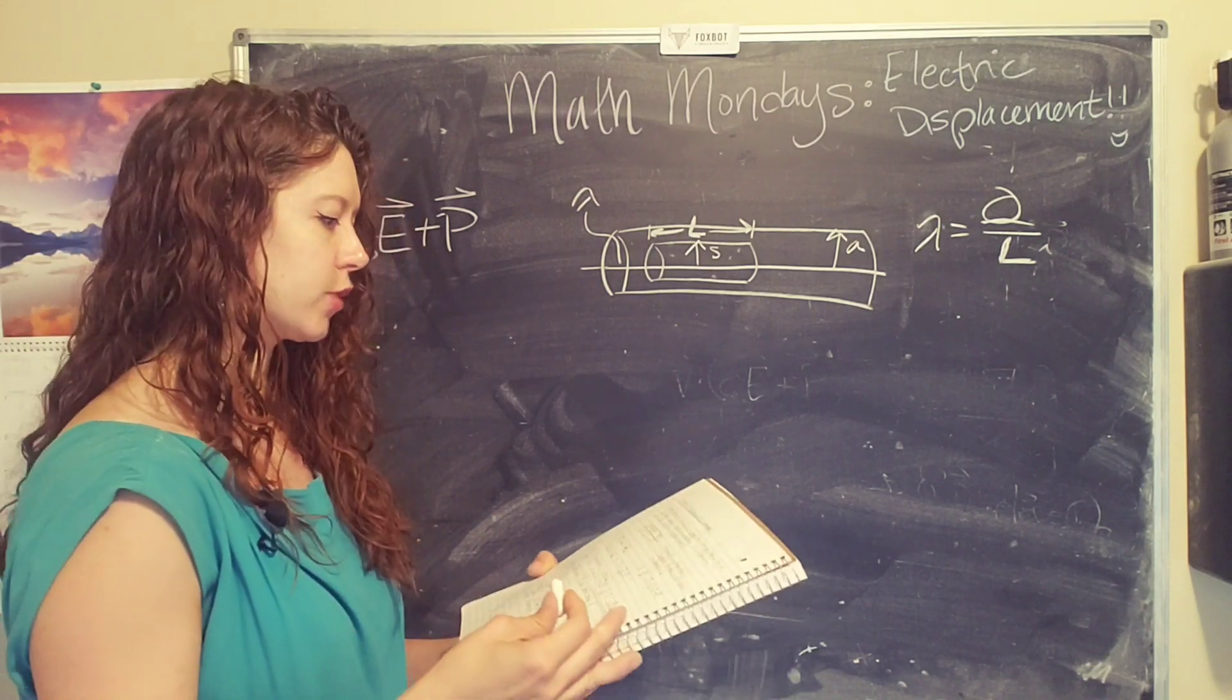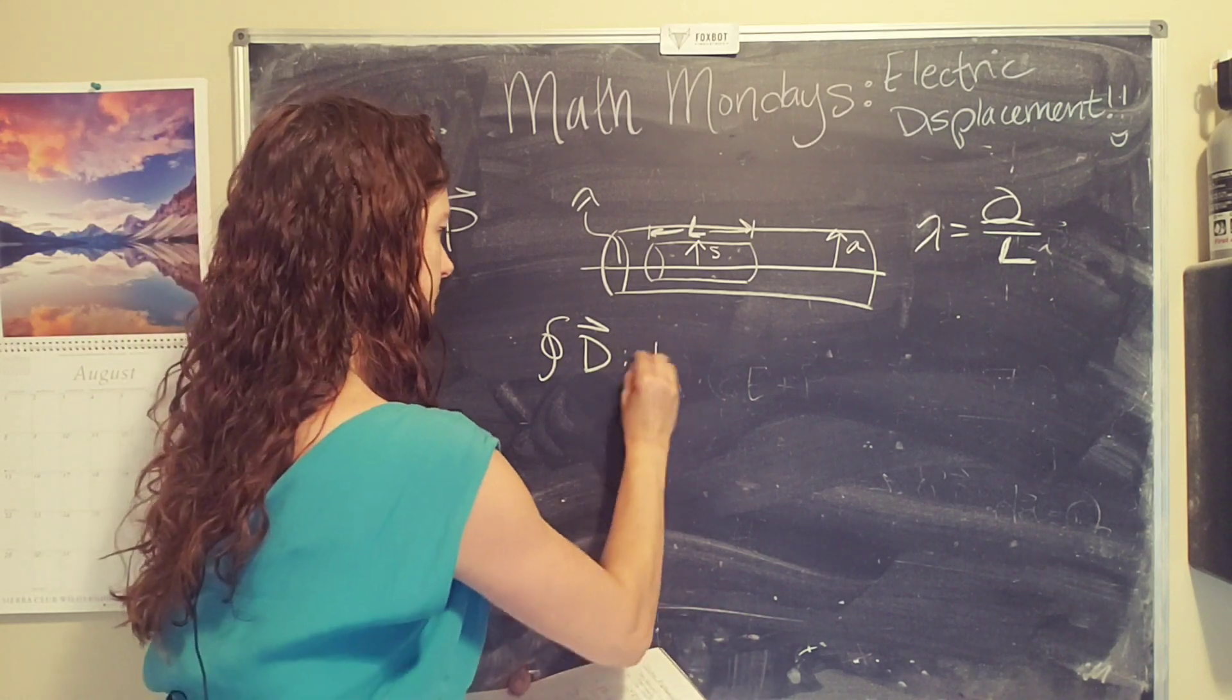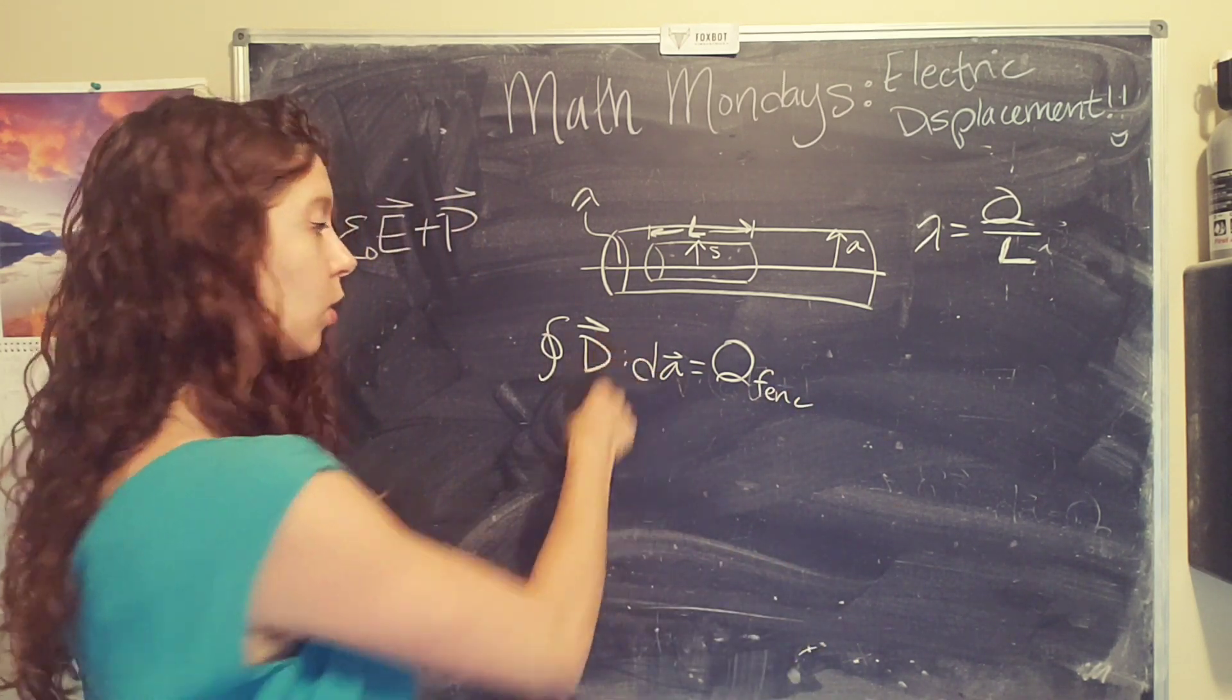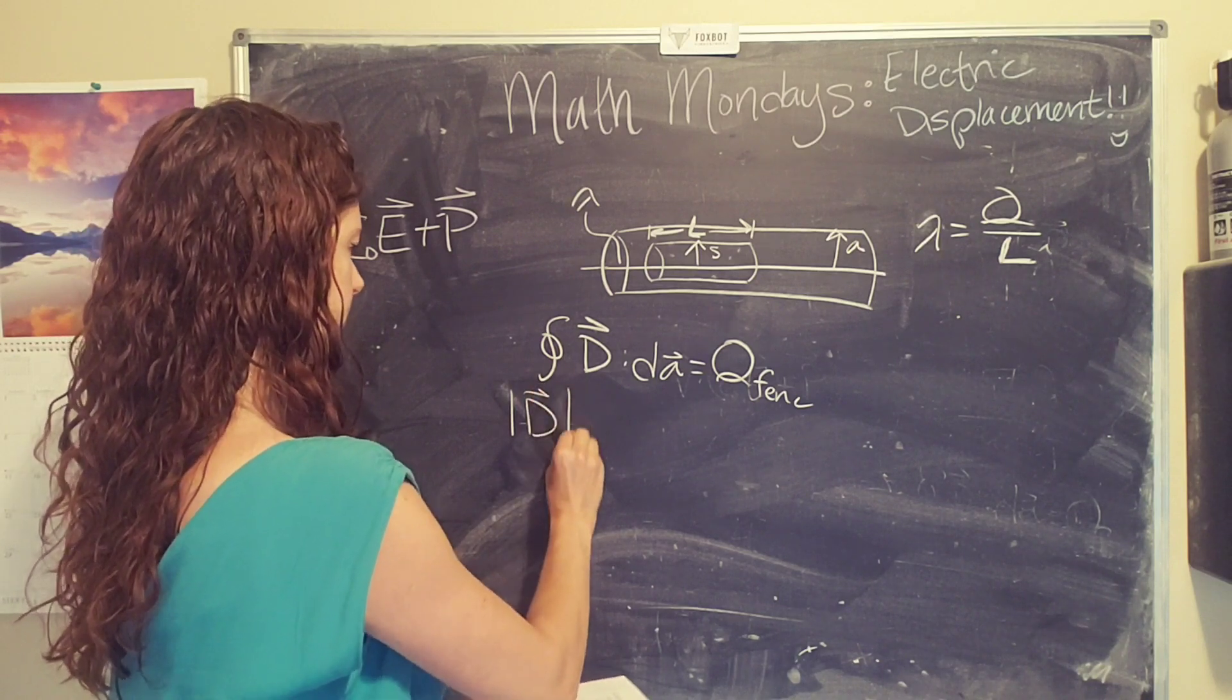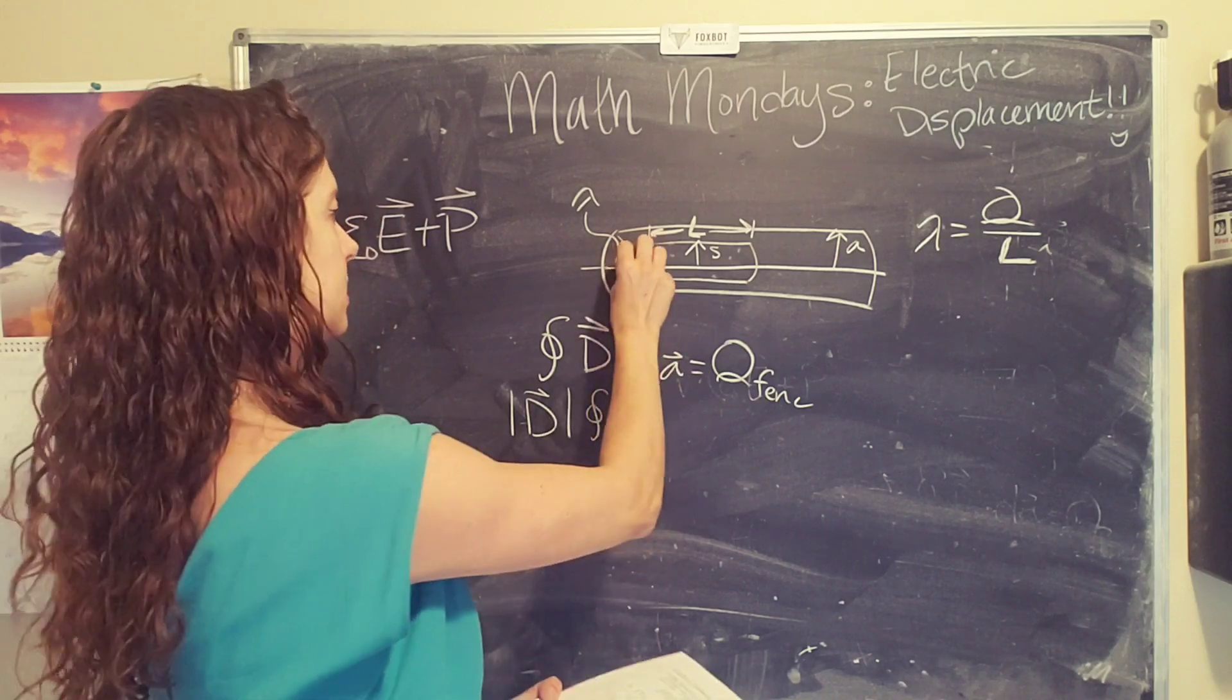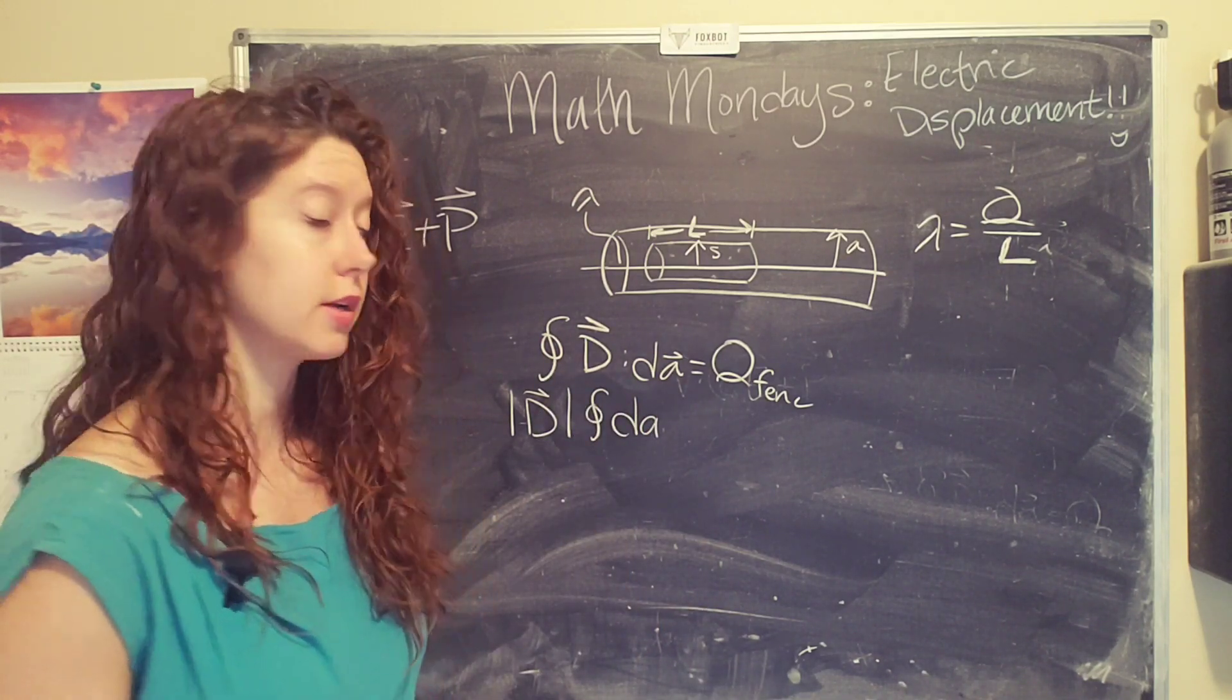we have our definition for electric displacement. So we're going to start with the Gaussian integral form, where we have the electric displacement dot dA equals QF enclosed, or the free charge enclosed. And what's really cool is that because it's a uniform line charge density, we can pop out the magnitude of d and just do the integral of dA. Note that only the round part of the cylinder counts because the edges are going to be perpendicular to d. So that part of the integral will go to zero, because two vectors that are perpendicular dotted together are zero.